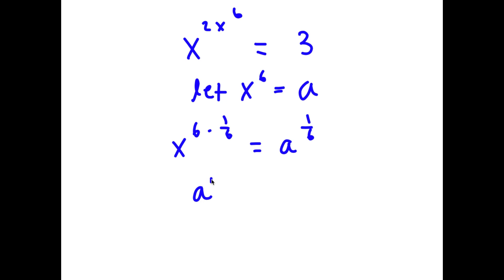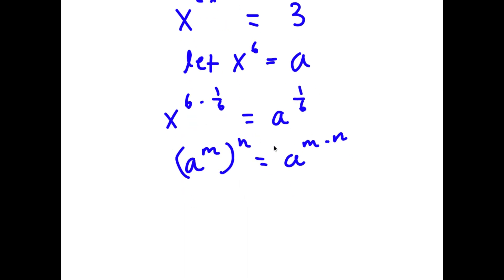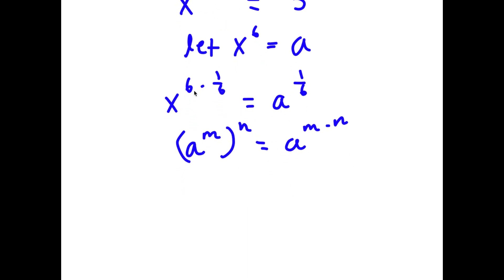Now, if I have something in the form a to the power of m to the power of n, this is equal to a to the power of m times n. So x to the power of 6 times 1 over 6 — that's 1 — so I have x to the power of 1 is equal to a to the power of 1 over 6, meaning x is equal to a to the power of 1 over 6.